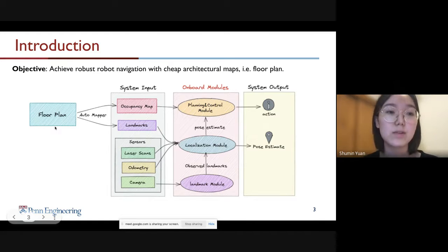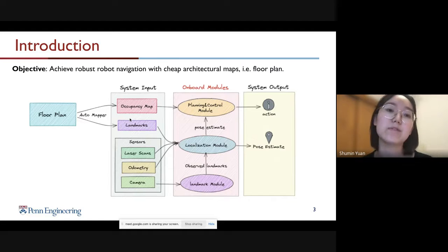With solely a floor plan, we can first use an auto mapping algorithm to extract information. It mainly consists of two types of information: the first type is an occupancy map, and the other one is a list of landmarks. Apart from them, we also have a sensor system consisting of laser scans, odometry, and RGB camera.